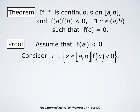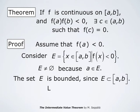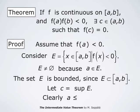Since we assume f(a) is negative, a belongs to the set E, and therefore the set E is not empty. The set E is bounded, since it is a subset of the closed interval from a to b. Therefore, it has a finite, well-defined supremum — a least upper bound c. Clearly, this least upper bound c is between a and b.